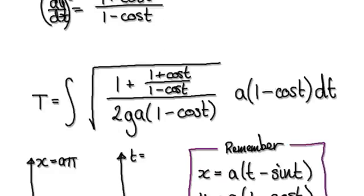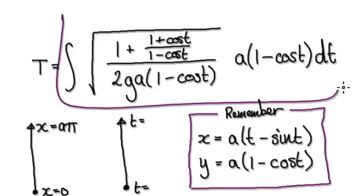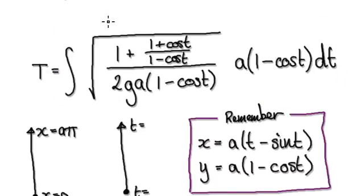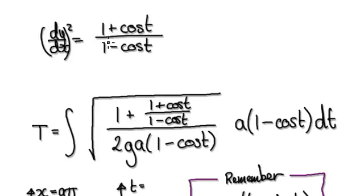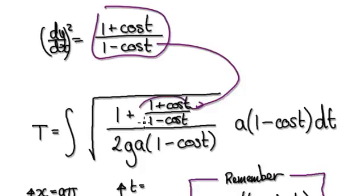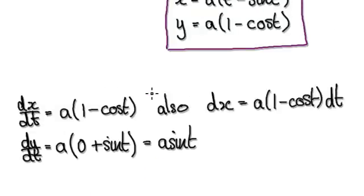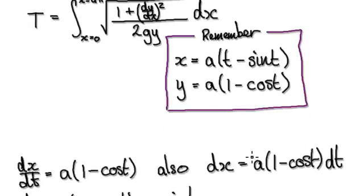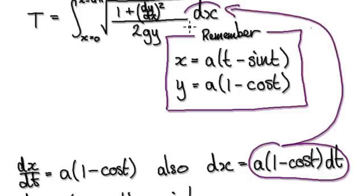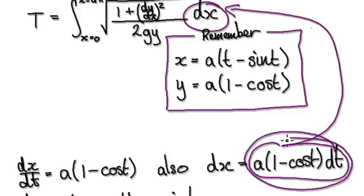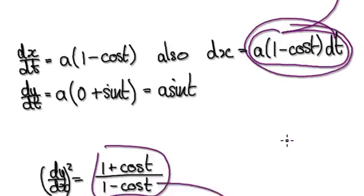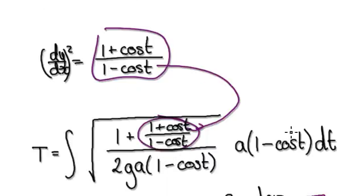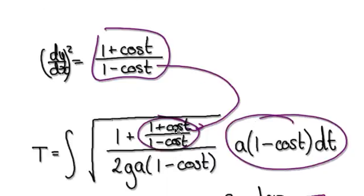It will then become this. Because earlier we worked out that dy/dx squared is given by this. We can put it into here, and then up here. And then dx is given by this — we can put it into the dx here. So this thing here is this.